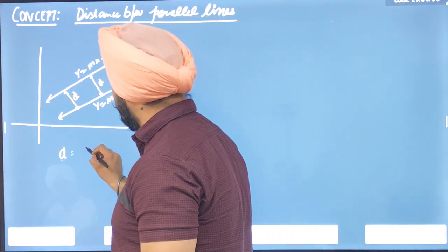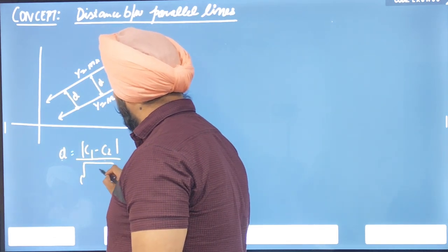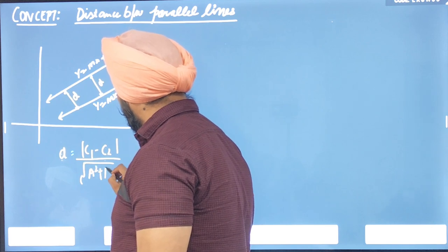The formula for the system is c1 minus c2 upon under root of a square plus b square.